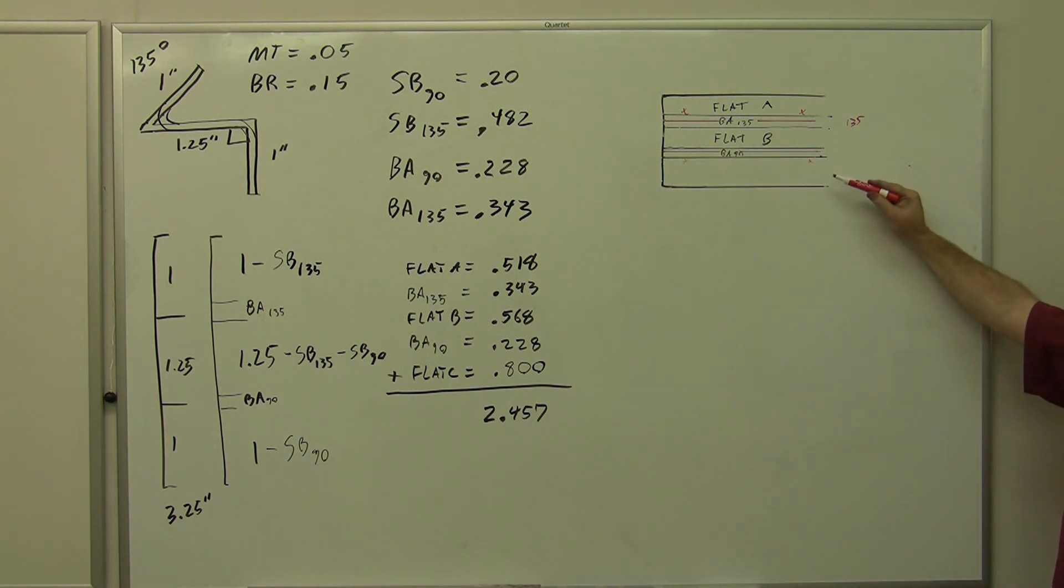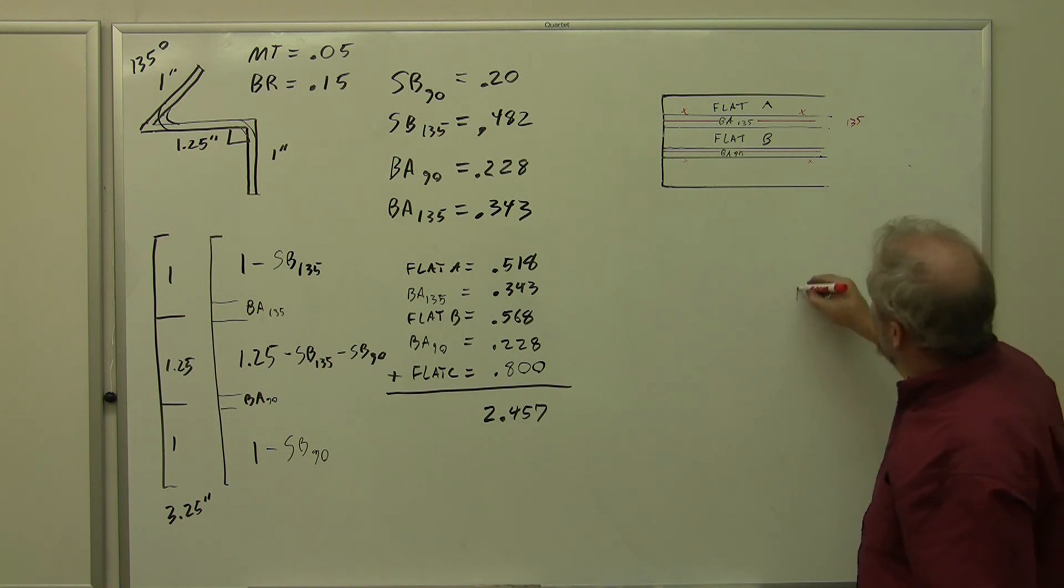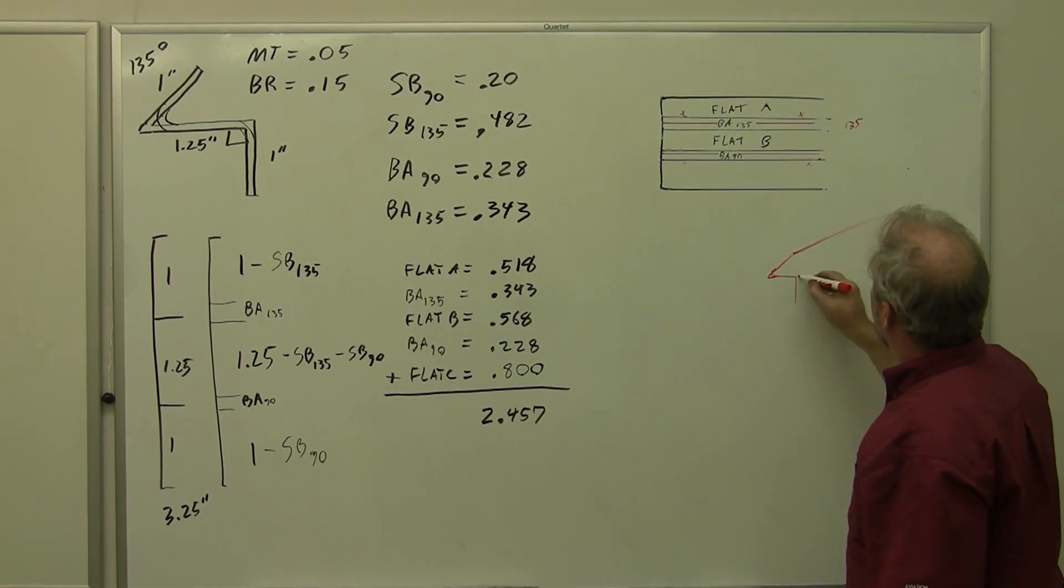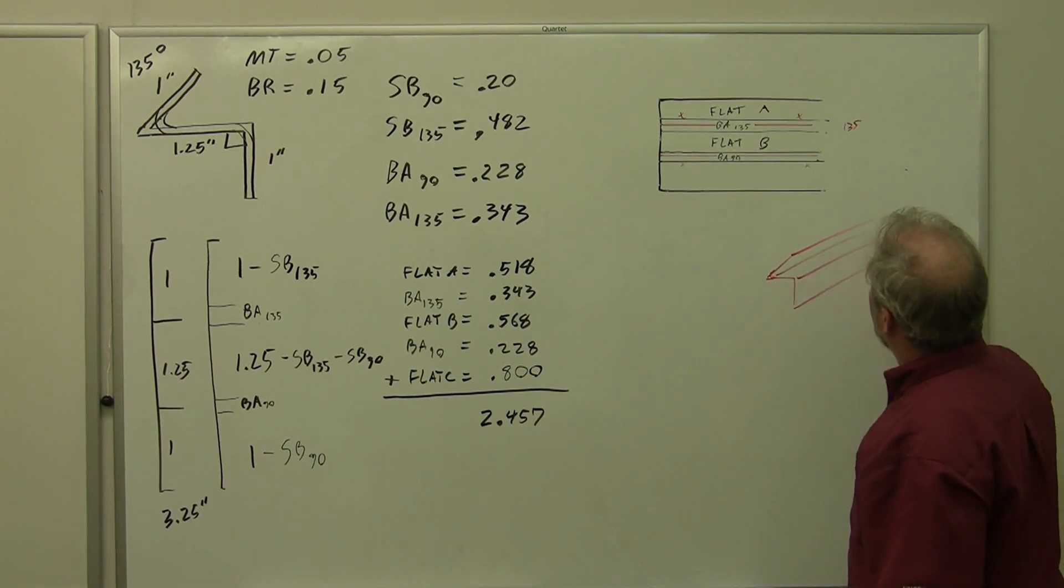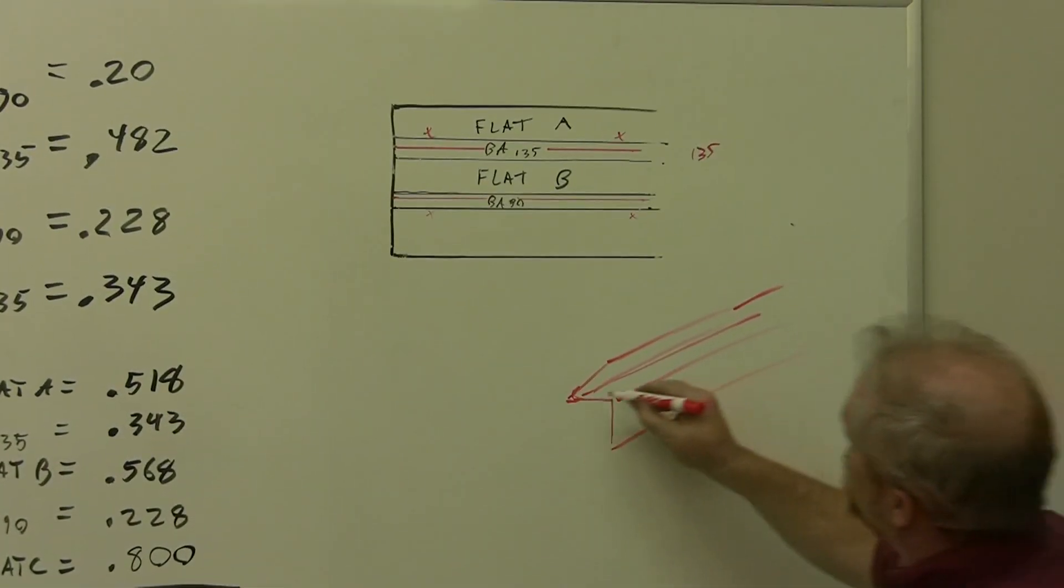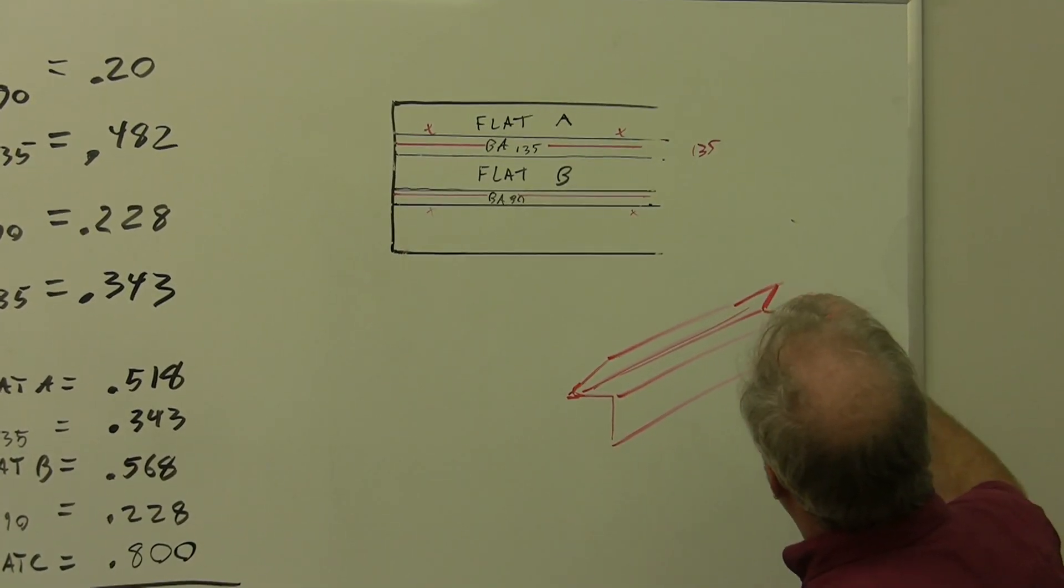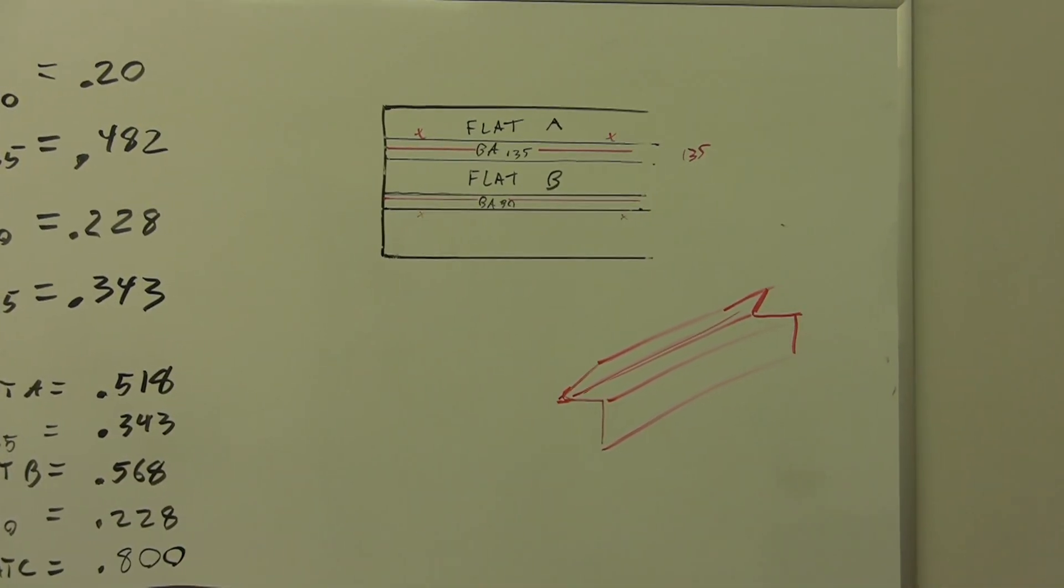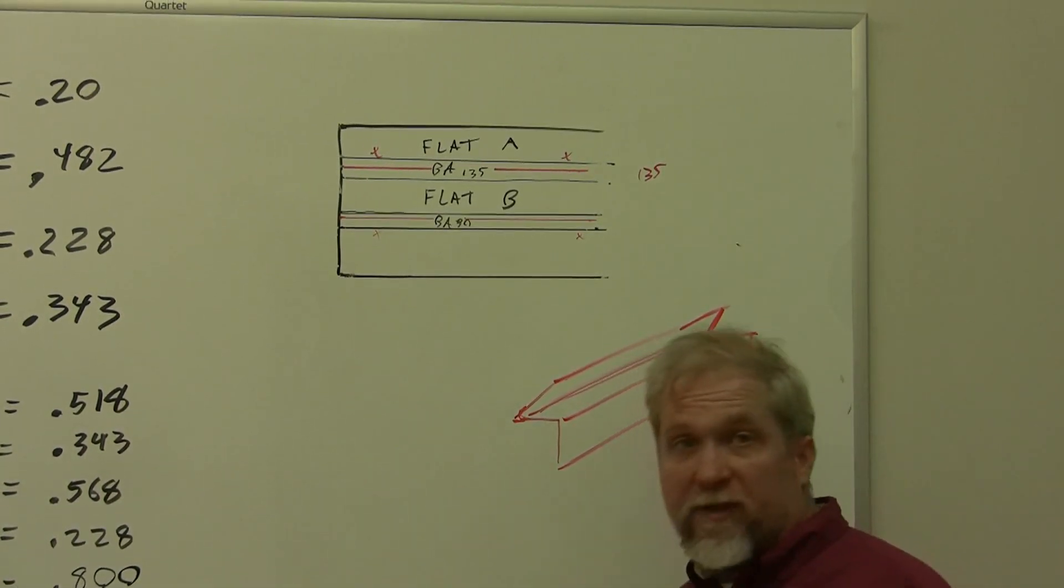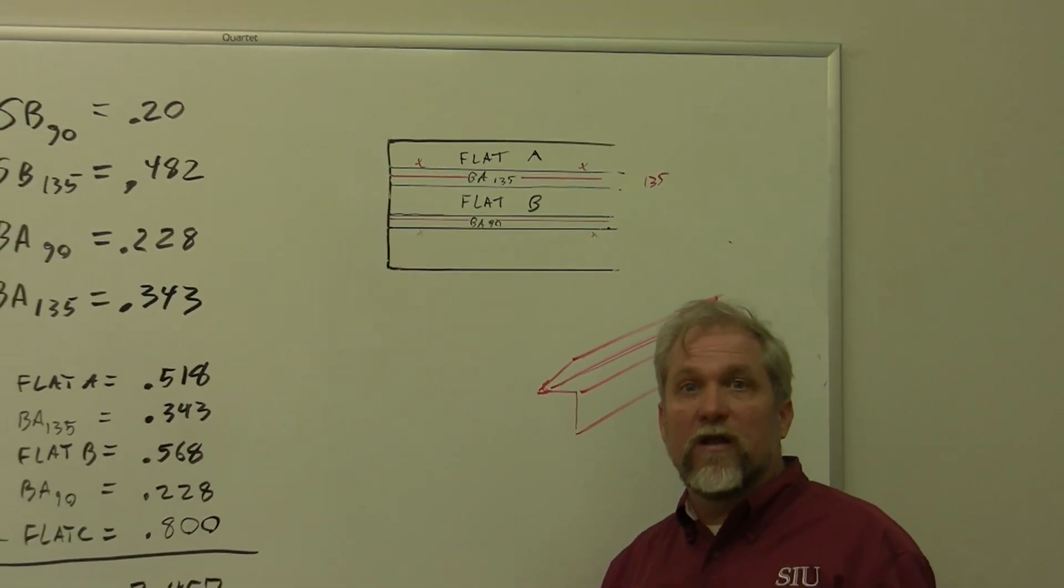So we could stick this sucker up into the brake, and we could bend ourselves this nice little channel that looks something like this. And this channel would just extend back however far we needed to be bent down the length of the airplane. Maybe it's a floor stiffener or something like that. But there are our four examples, and I hope this helps you understand how the numbers work a little bit better.